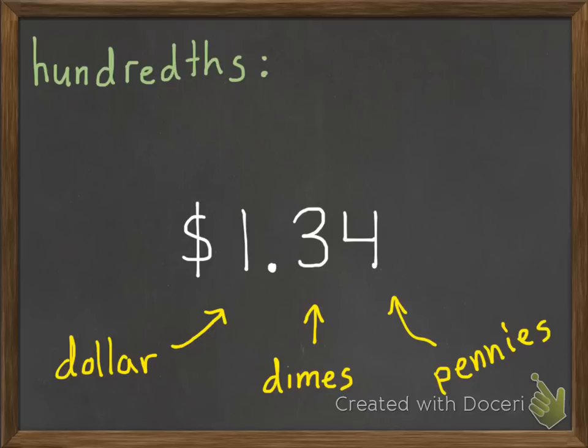So here we go, hundredths. In fraction form, we'd have one hundredth, 1/100. So those are pretty small. If we're breaking something into a hundred pieces and we just have one, that is a very small fraction. In decimal form, we'd write it like this. We have zero wholes, not enough to make a tenth, and just one hundredth.